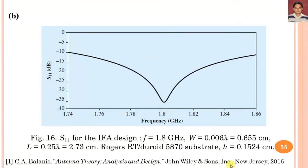With these length and width values, the inverted F antenna can be designed using computational electromagnetic (CEM) software such as HFSS, CST, or other CEM tools. When we consider these design parameters for the IFA in simulation, we obtain the reflection coefficient magnitude. The resonance frequency after CEM analysis is obtained close to the design frequency of 1.8 GHz, with slight variation possibly due to inductive or capacitive coupling within the IFA design.